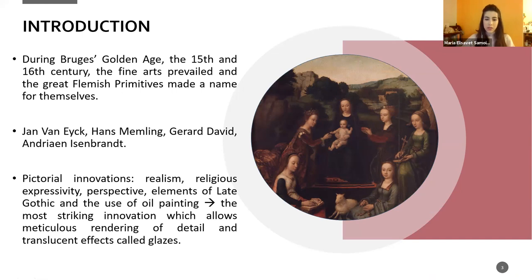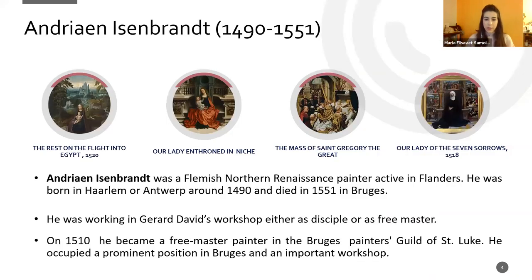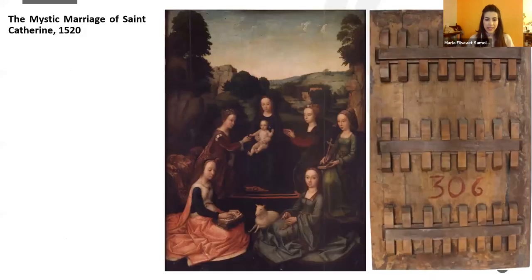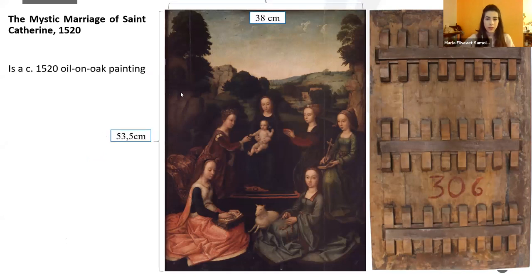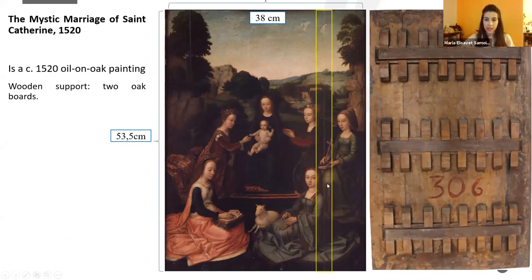Adriaen Isenbrant was a Flemish Northern Renaissance painter active in Flanders in the 16th century, and here we can see some of the most famous paintings attributed to him. The painting under study is the Mystic Marriage of Saint Catherine, dated to 1520. It is an oil on oak panel painting, measuring 53.5 by 38 centimeters, and the wooden support consists of two oak boards.